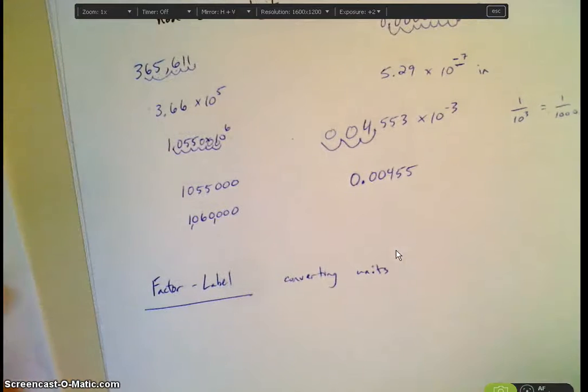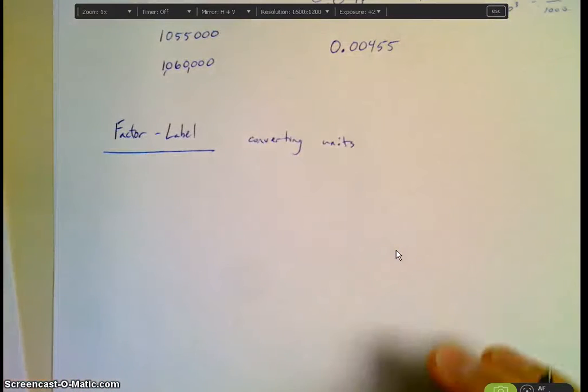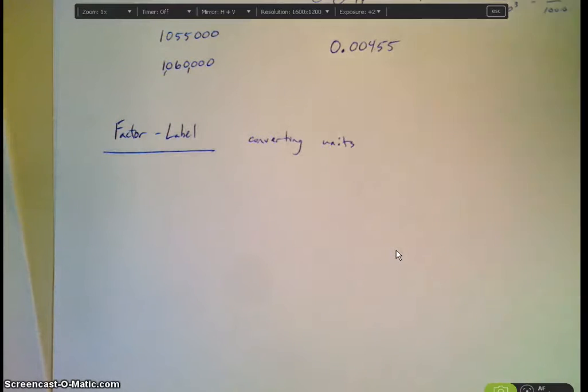So what we're doing in factor label is we're just converting from one unit to another typically. Sometimes we use things like density to go from a mass to a volume. Sometimes we can use a concentration in chemistry to go from one substance to another. But essentially we're converting units. We're usually not changing the quantity. We're just changing how we represent it. So instead of saying, you know, 6 inches, I can use factor label or unit conversions to convert it to centimeters and get, you know, 15.3 centimeters. And I didn't change the length. I just changed the way that I'm, you know, what I'm calling it.